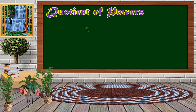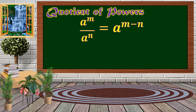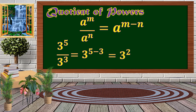Next, we have the Quotient of Powers. To divide polynomials with the same base, just copy the base and subtract the exponents. For example, 3 raised to 5 divided by 3 raised to 3 — copy the base 3, then subtract the exponents: 5 minus 3, giving us 3 raised to 2.